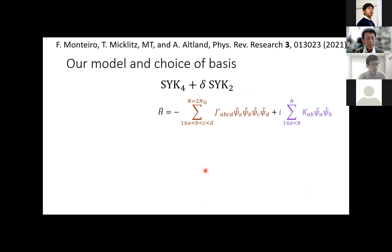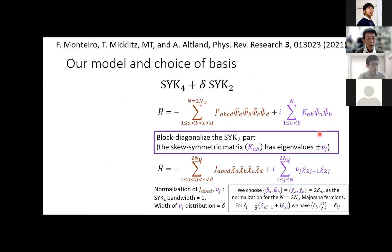We now start discussing the main part. We use N equals 2Nd Majorana fermions. Any four of them interact randomly in the first term, SYK4, and any two of them are randomly coupled in the second term, SYK2. We can choose a basis in which the second term is block diagonal, each chi coupled to only one other. The only remaining parameter is the ratio between the distribution of these eigenvalues and the bandwidth of the first term, determined by the width of the Gaussian random distribution for J_ABCD.